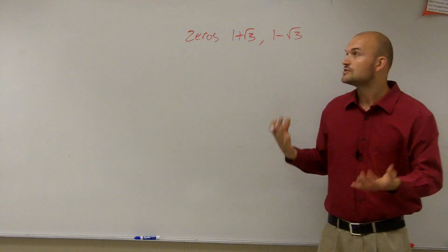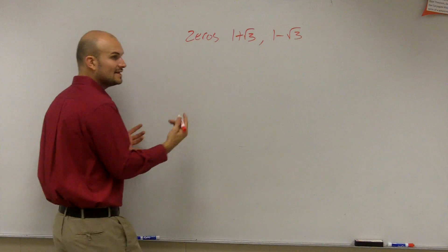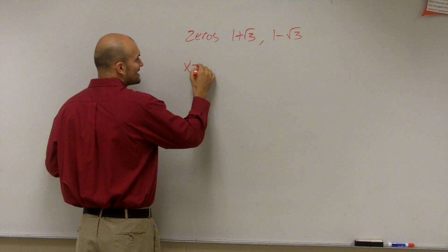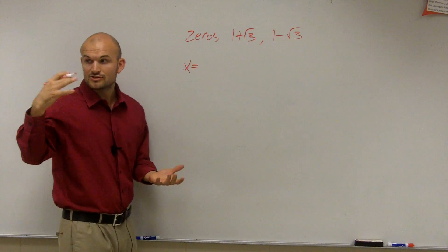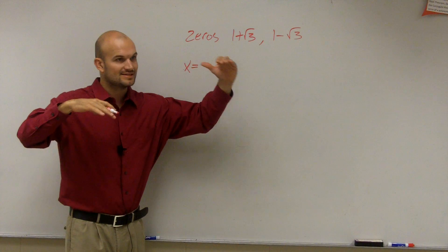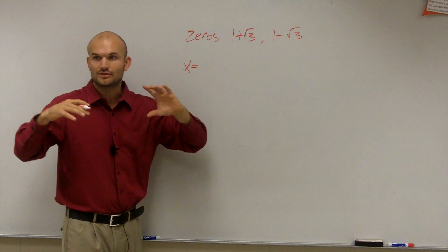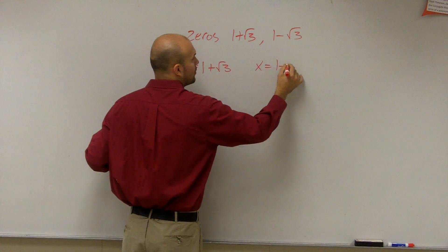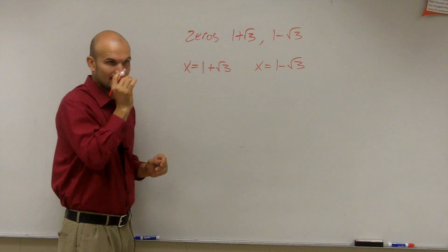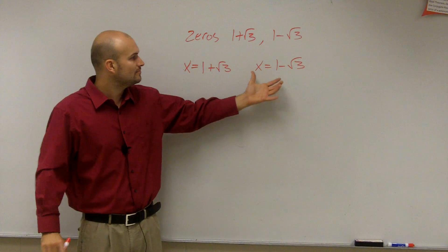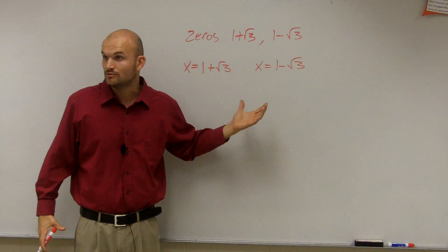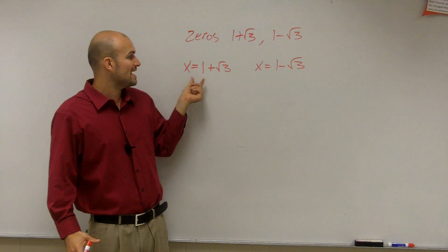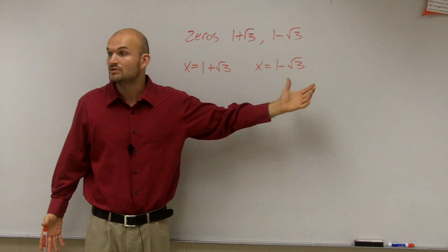The zeros, the solutions. So when we write that, when we're finding the solutions, we said x equaled your zeros, right? Remember those notes we took last class? We were talking about the zeros are equal to the x-intercepts. They're equal to your roots. So x equals 1 plus square root of 3, and x equals 1 minus square root of 3. So then what we did from before we got to here, we set them all equal to 0.